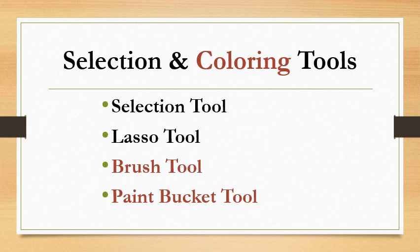Number 2 is the lasso tool. Lasso tool is used to select irregular areas of any object. This is a freehand selection tool. Isse hum mouse pointer ko bhi vaise move karva sakte hain jaise hum pencil se kisi object ko select karte hain — jaise pencil ko move karte hain.